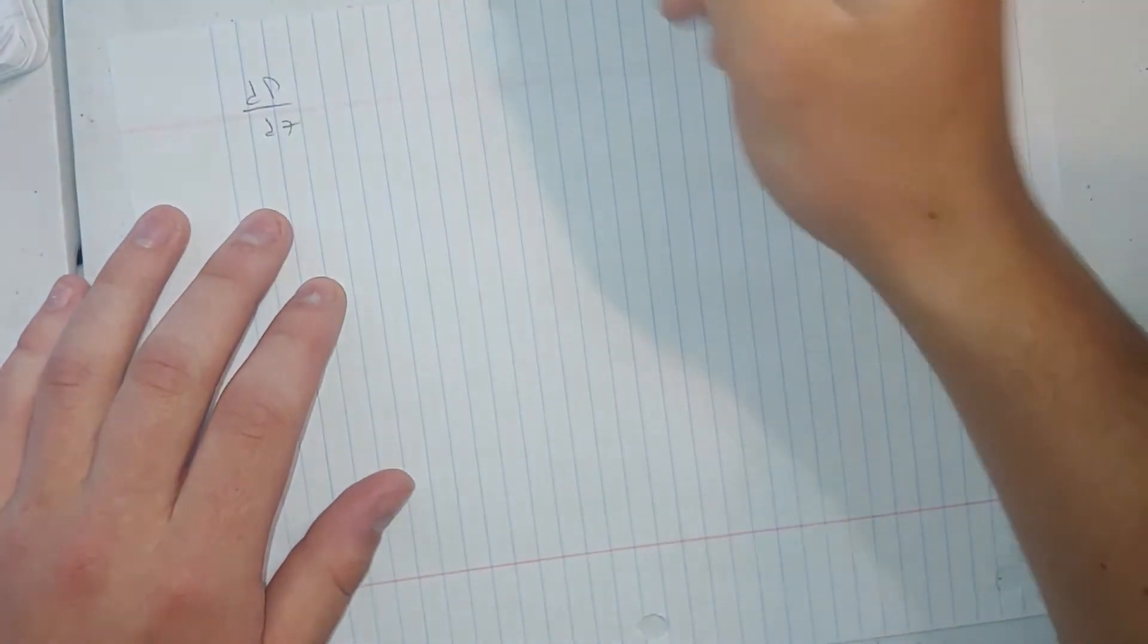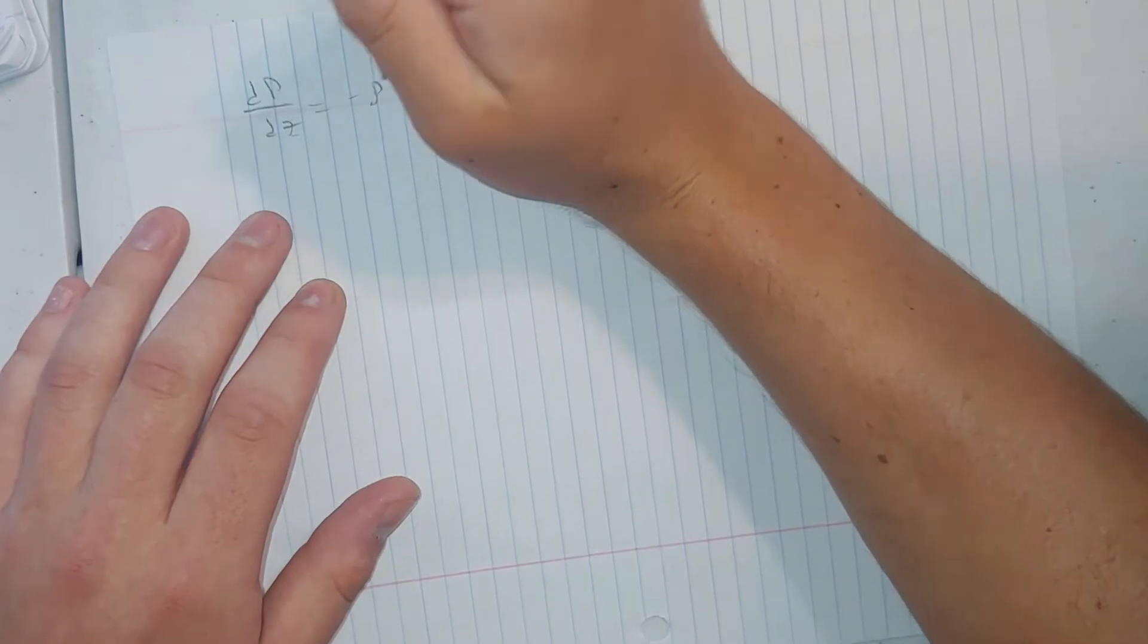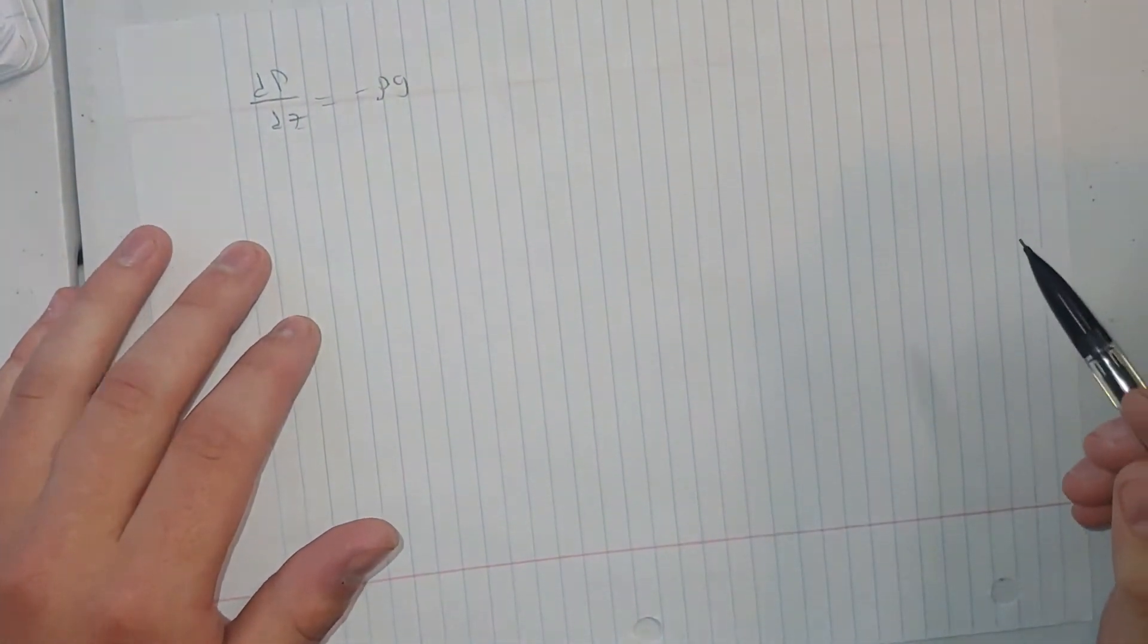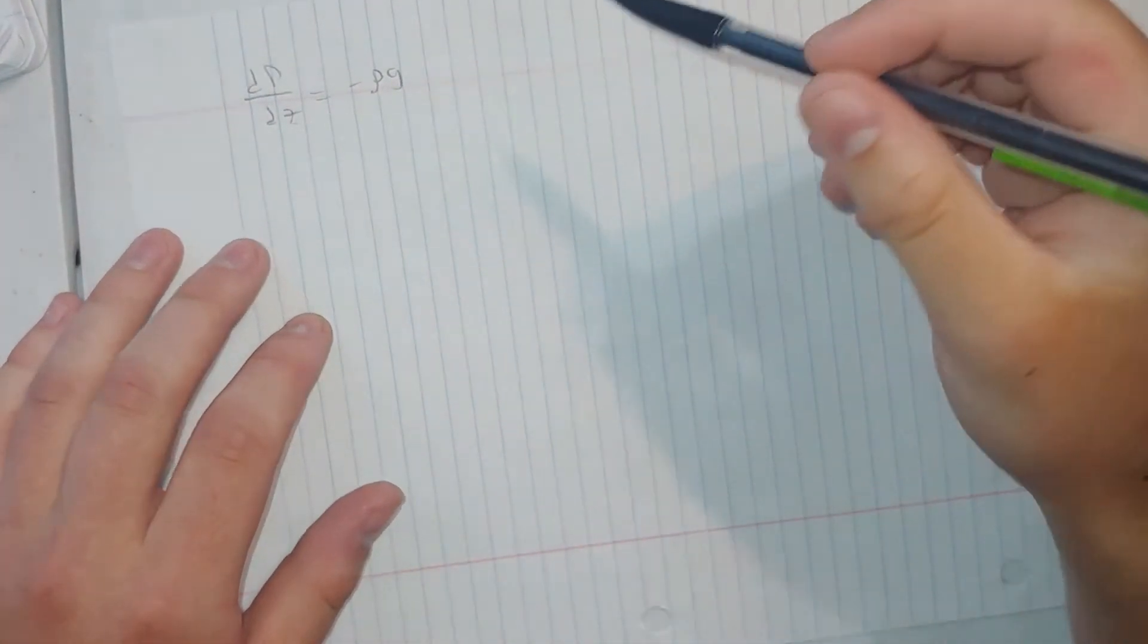Okay, so today I'm going to be deriving the equation dp/dz equals the opposite of ρg and showing how it can be used to find a change in pressure due to a change in altitude.